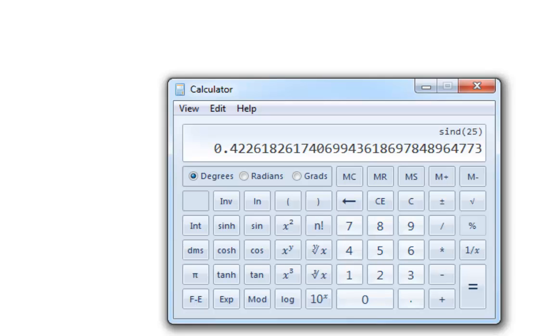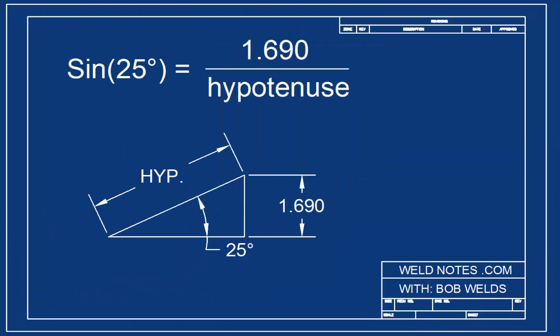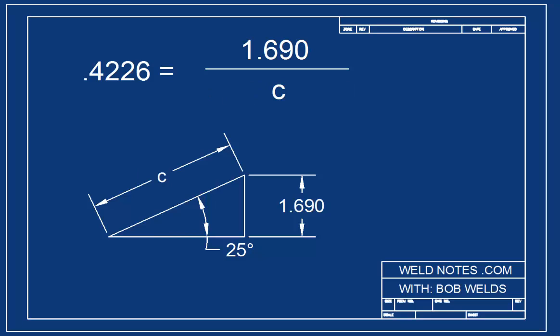We only need the first few decimal places of that. So instead of saying sine of 25 degrees here, we'll say .4226. Here I'll rewrite our equation. Now it's an algebra problem. We need to isolate the hypotenuse to see what its value is. I'm going to call it C to keep things neat and clean.